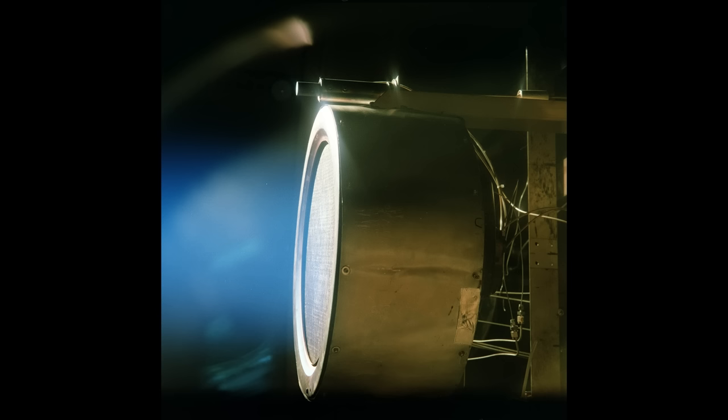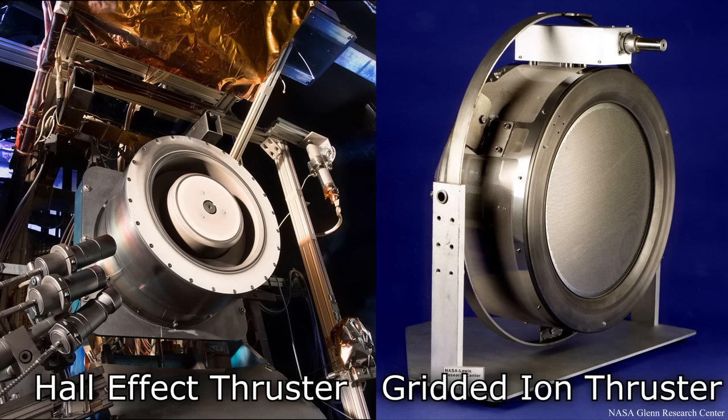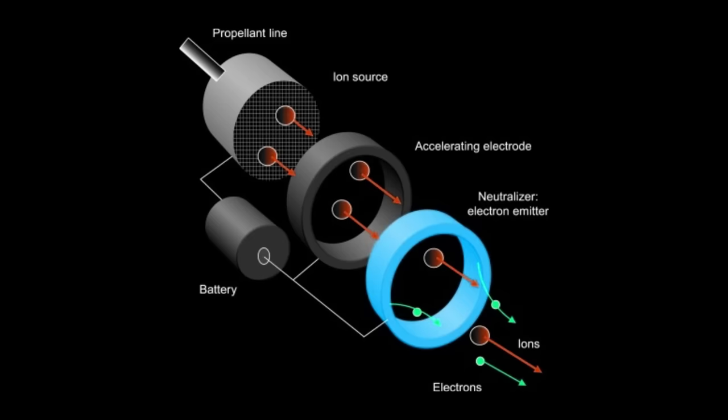Hall Effect thrusters are one type of electrostatic propulsion system. The other common type that's in use is the gridded ion thrusters, but Hall Effect thrusters have come to dominate the higher thrust, lower specific impulse end of the market. With Hall Effect thrusters on every single Starlink satellite, they're now the most common in use by a long way.